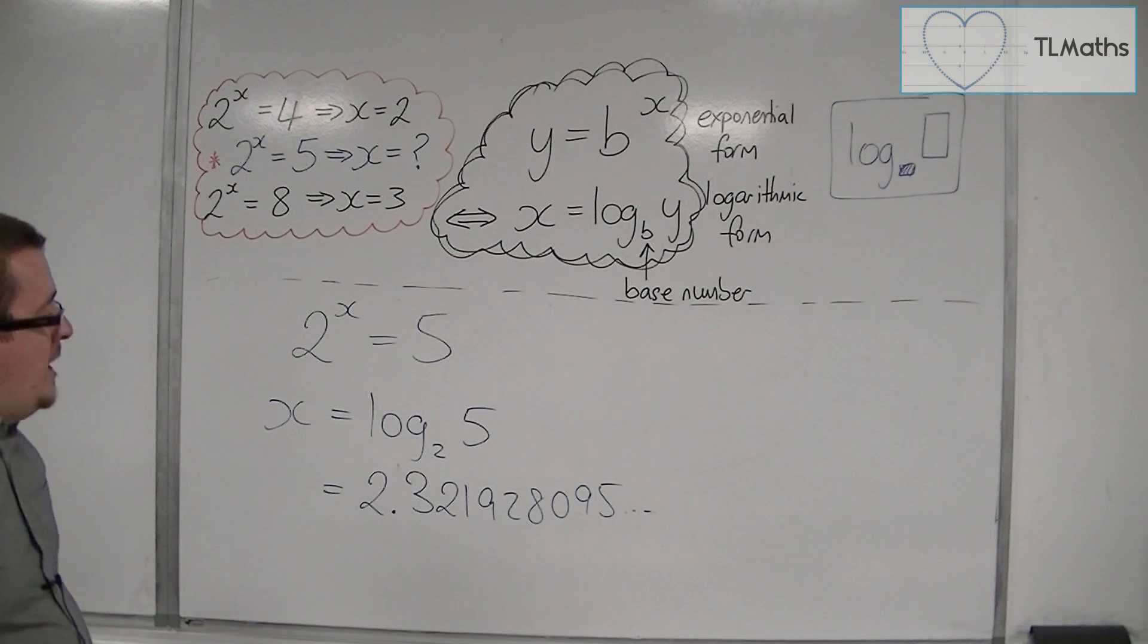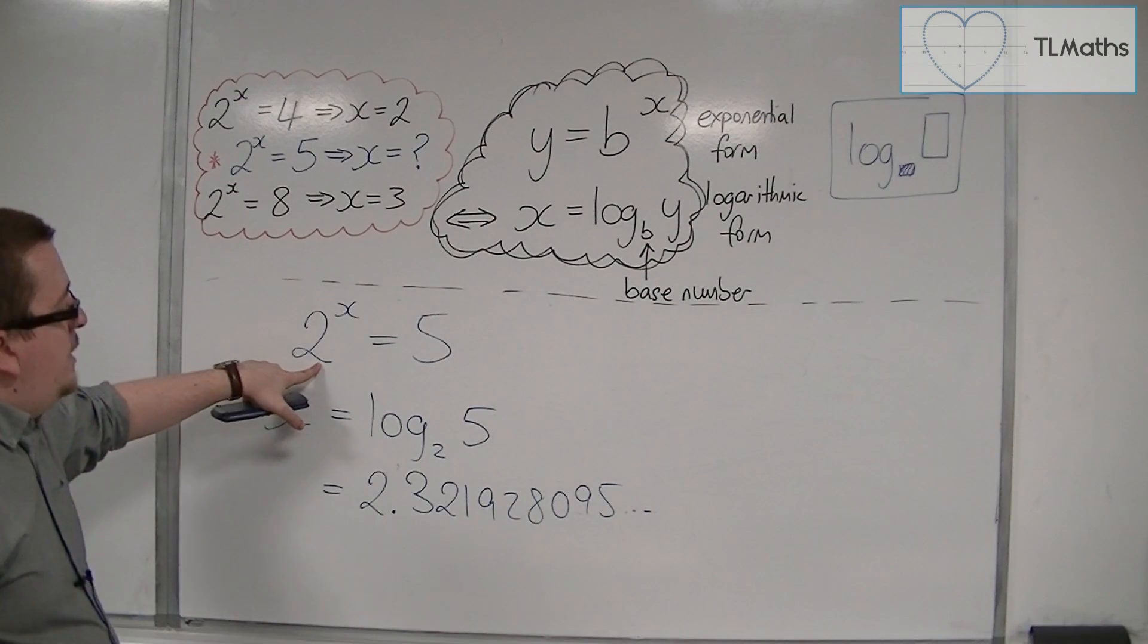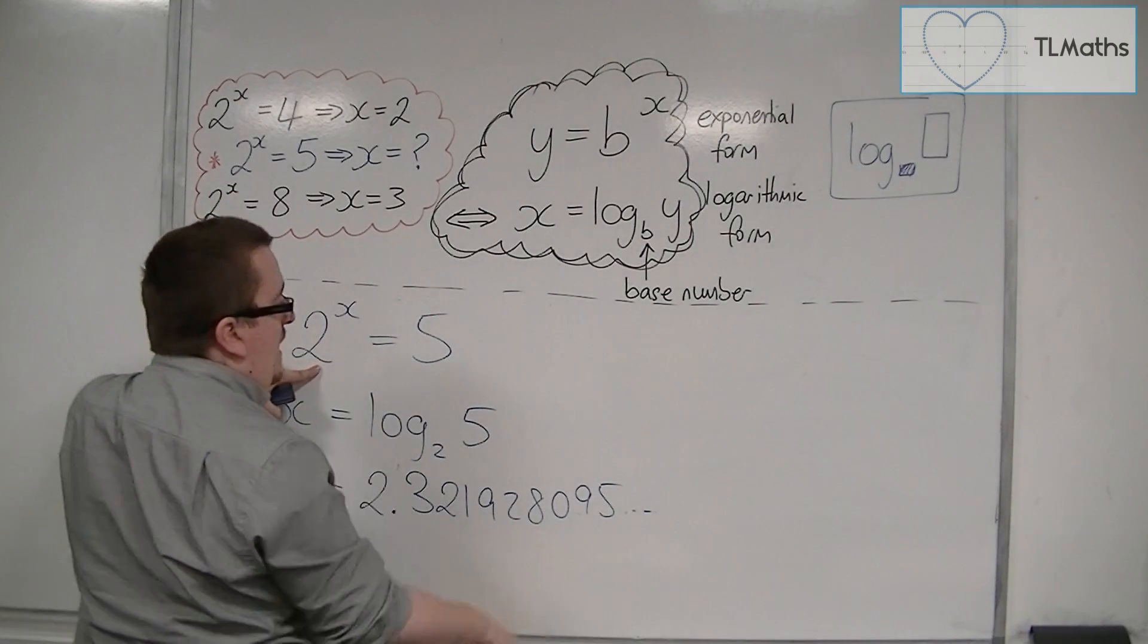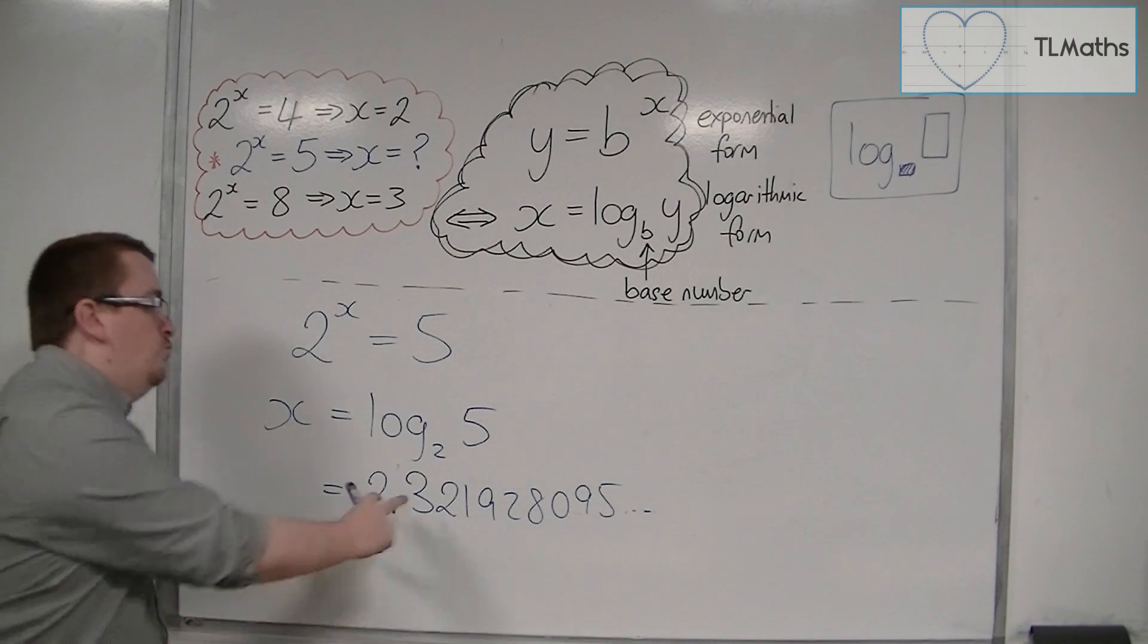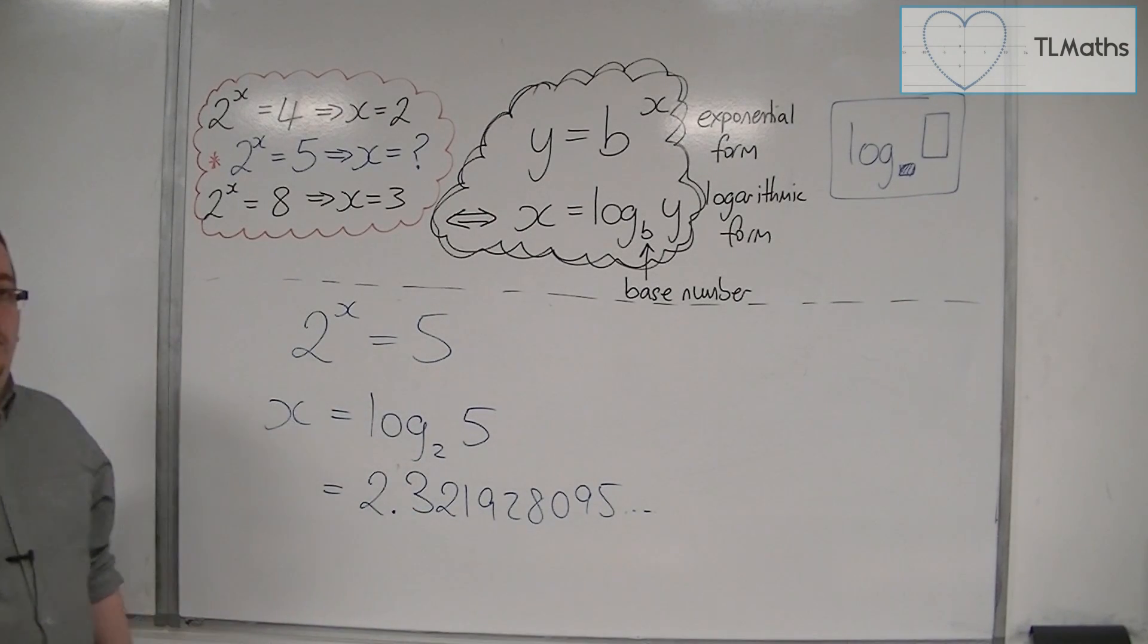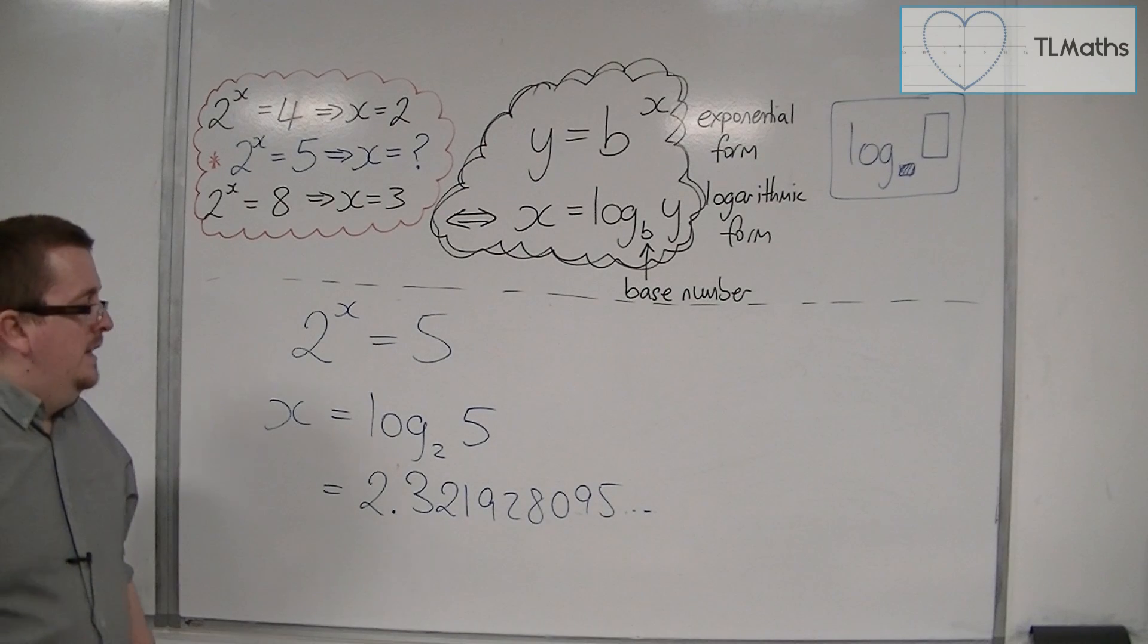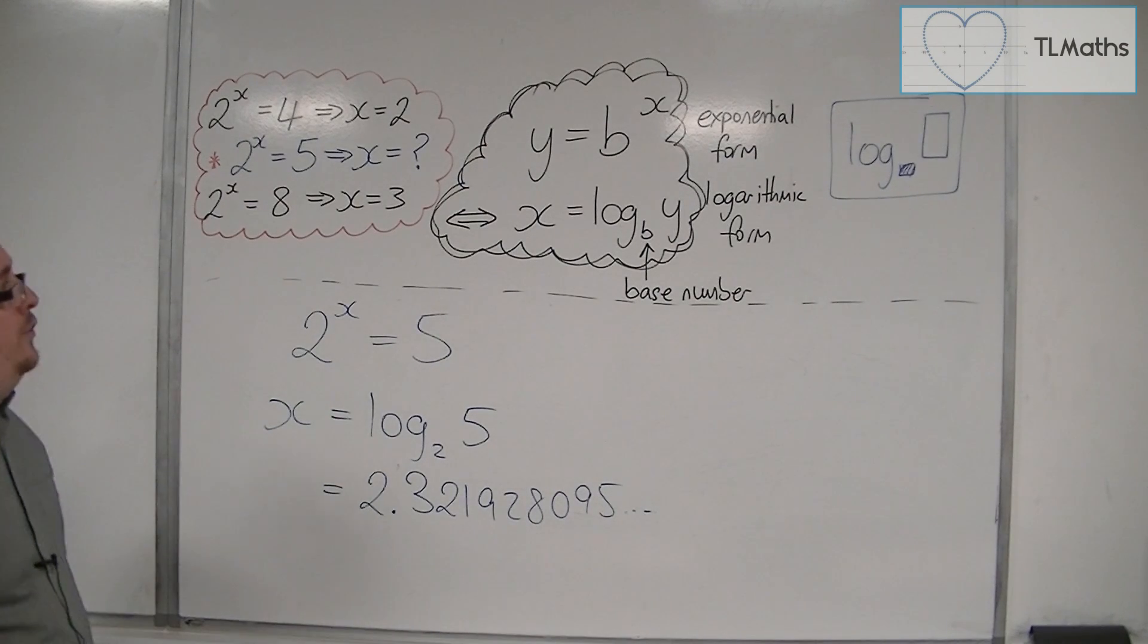And you can always check this. You can type into your calculator 2 to the power of that number and you should get 5, or if it's rounded, something very close to 5. And that is how we can solve an exponential equation like that.